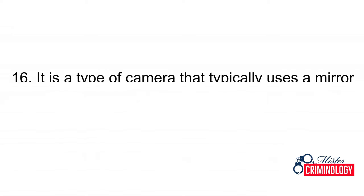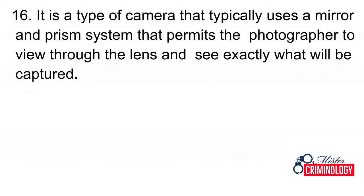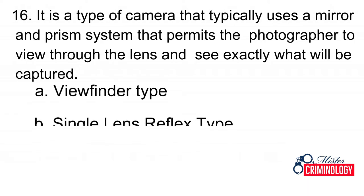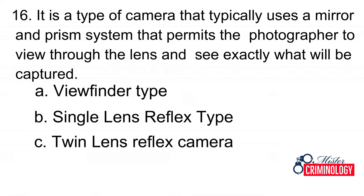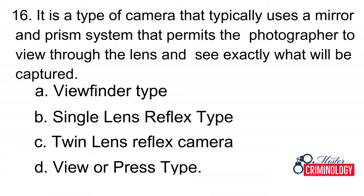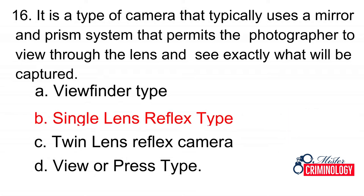Question 16: It is a type of camera that typically uses a mirror and prism system that permits the photographer to view through the lens and see exactly what will be captured. A. Viewfinder type, B. Single lens reflex type, C. Twin lens reflex camera, D. View or press type. Answer: B. Single lens reflex type.